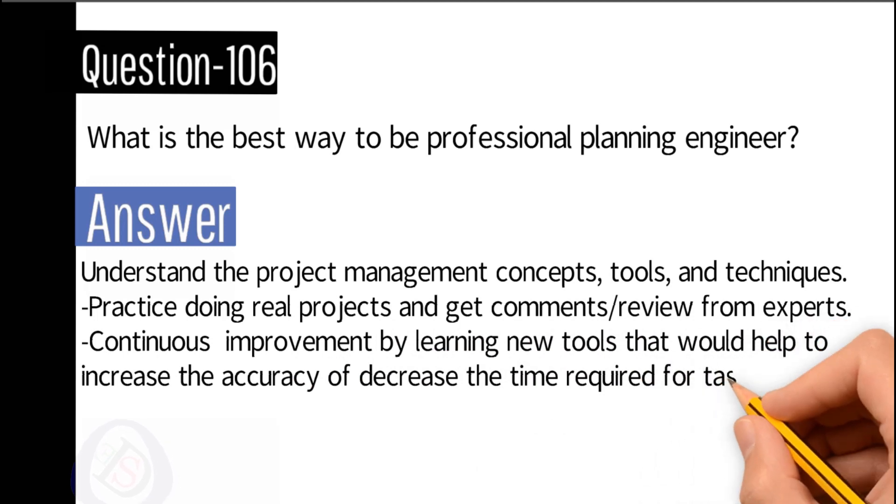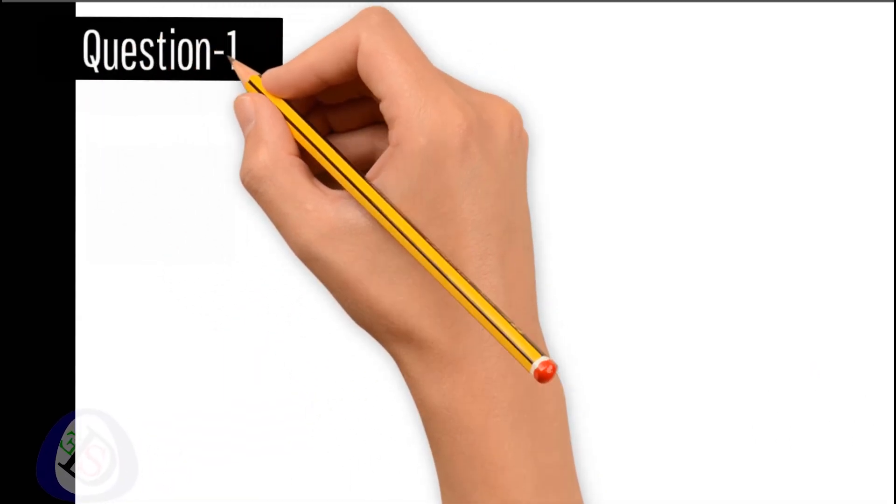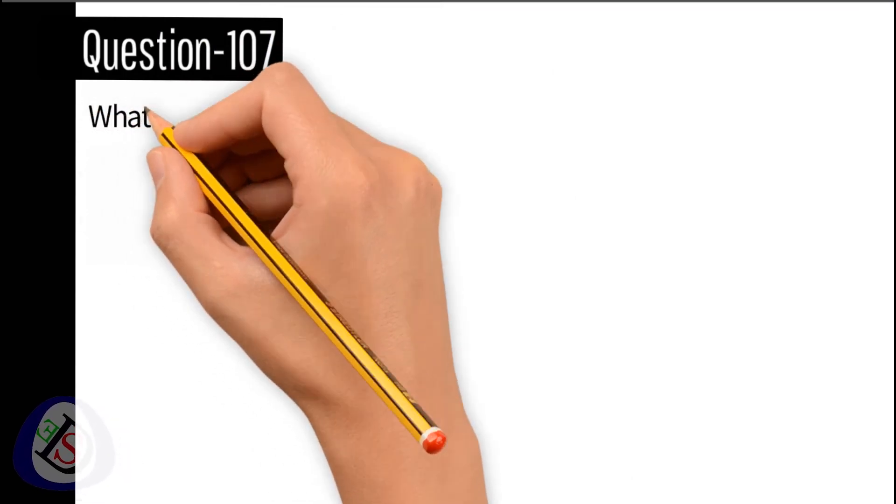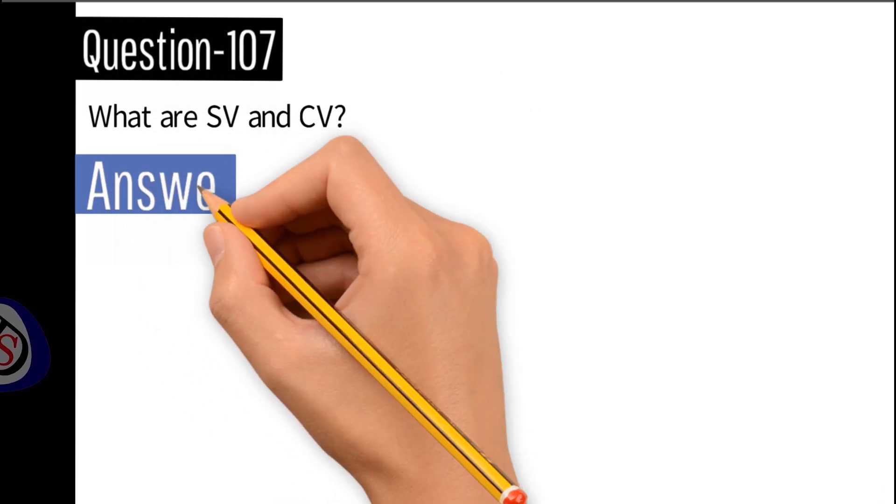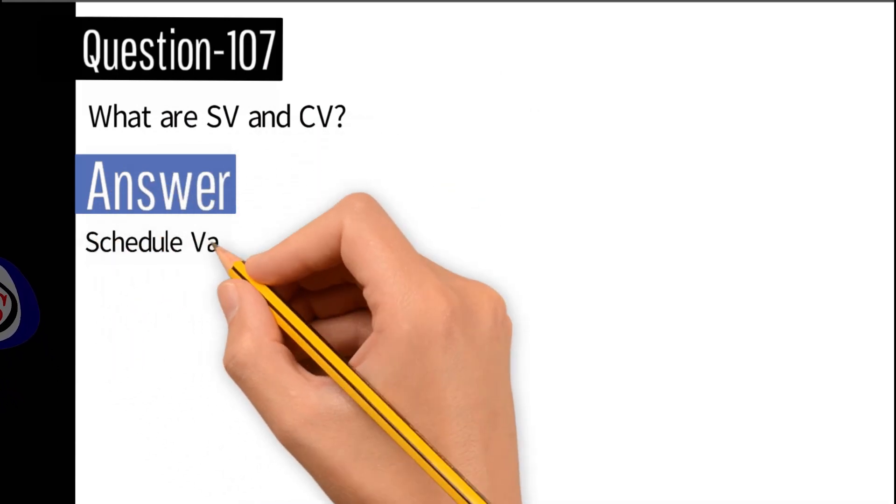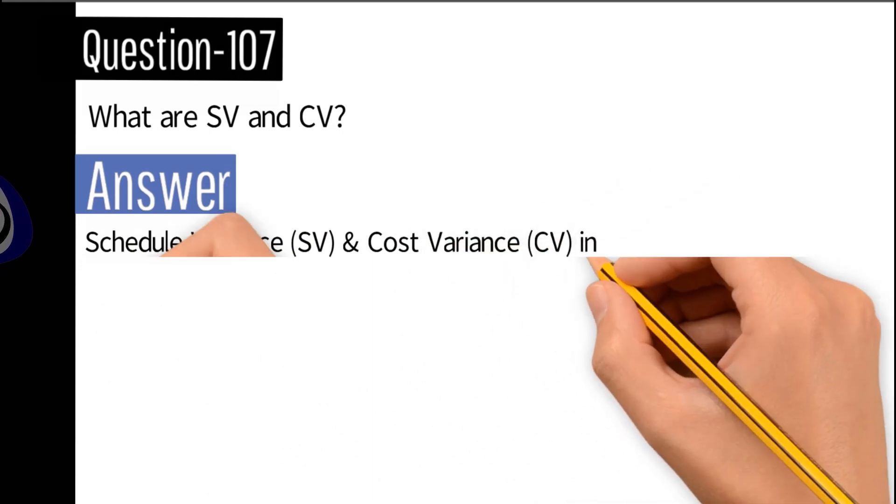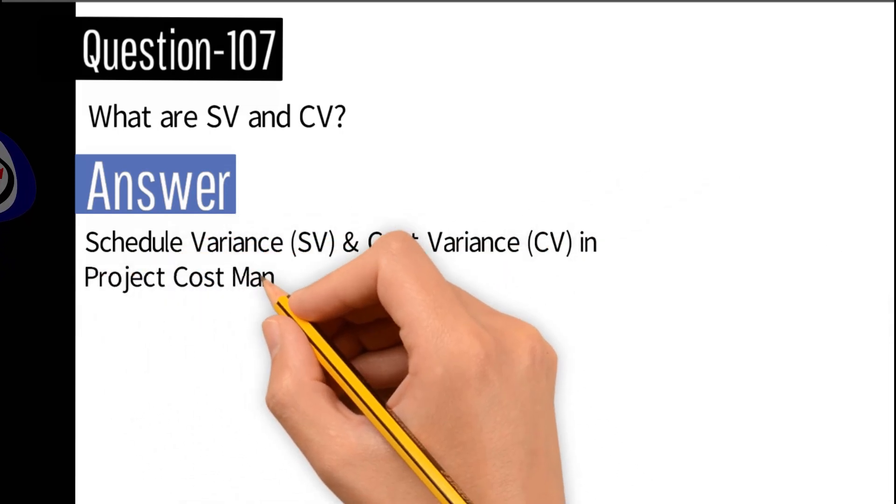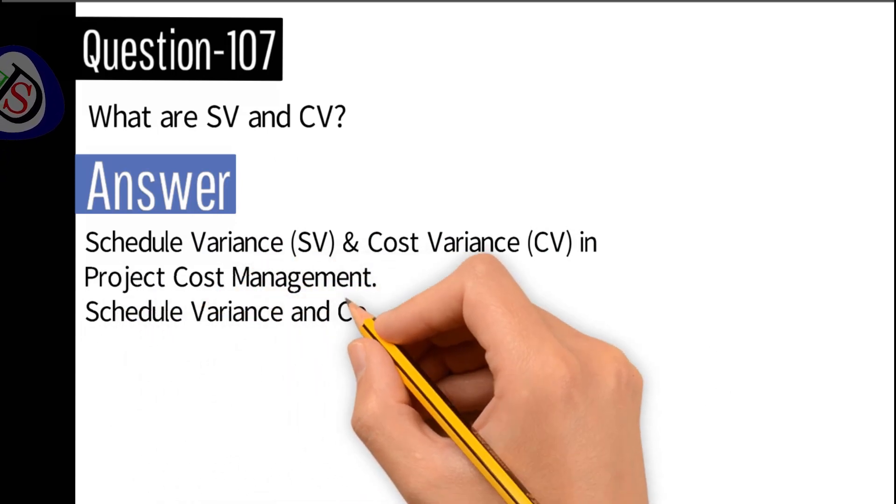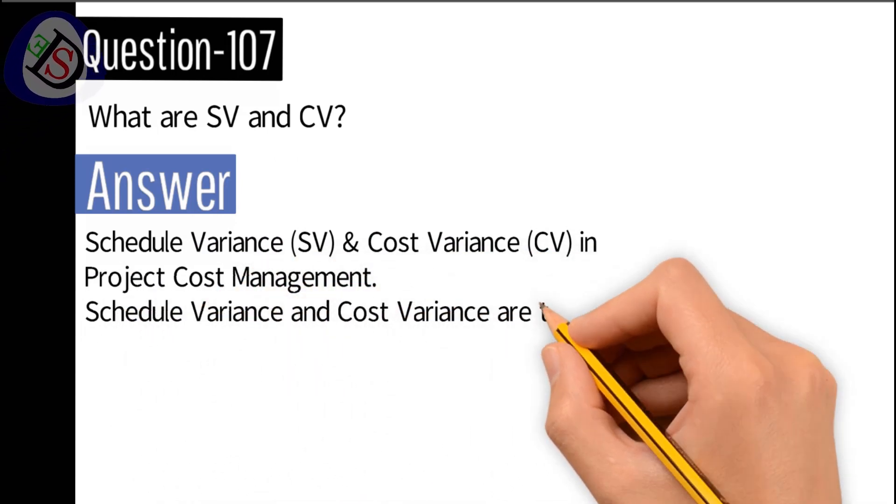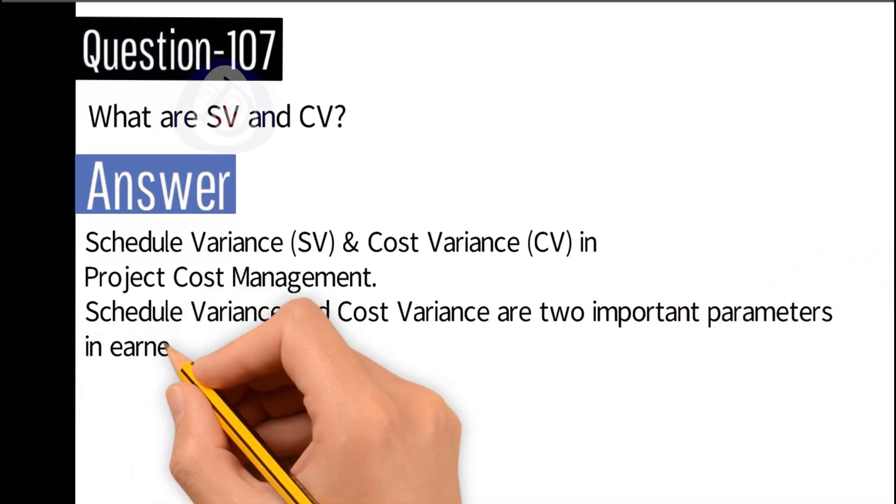Question number 107: What are SV and CV? Answer: Schedule variance (SV) and cost variance (CV) in project cost management. Schedule variance and cost variance are two important parameters in earned value management which help you analyze the project's progress.